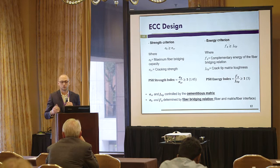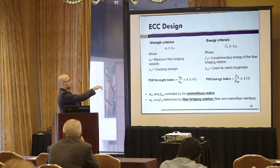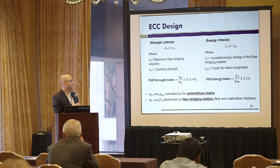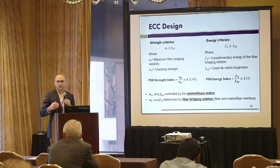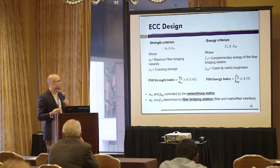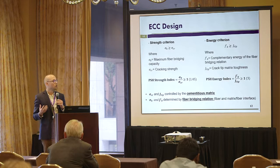The values that generate these indexes — σ_cr and J-tip — are controlled by the water-to-cement ratio, the type of cementitious materials used, and the type of aggregate. σ₀ and Jb are controlled by the fiber bridging relation, which is mainly affected by the fiber and by the interface between the fiber and the cementitious matrix.